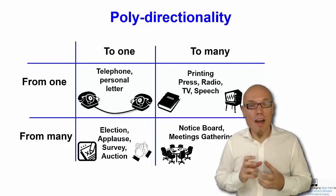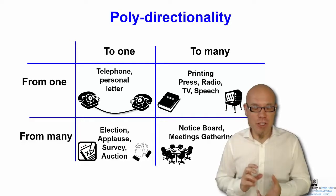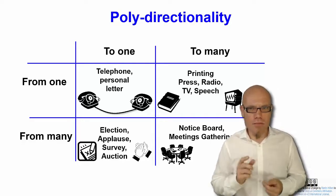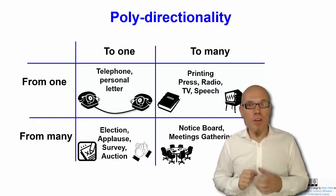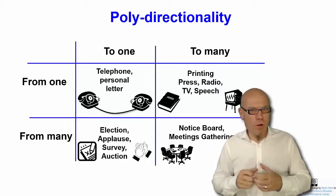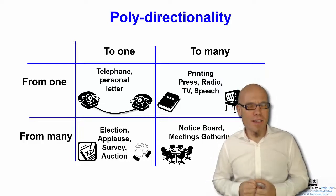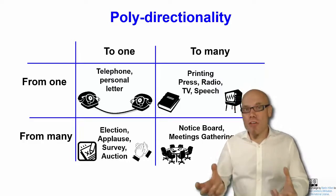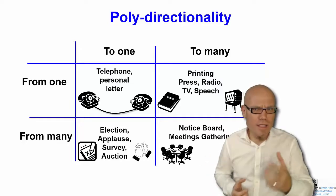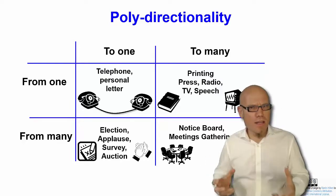Digital networks allow for all of them selectively. So you can use a social media site to write somebody a message one-to-one, you can broadcast something from one-to-many by posting something on a social media site, and you can get feedback from many-to-one — for example, you receive likes or dislikes on a post — and you can have a conversation many-to-many.